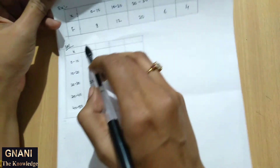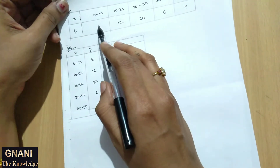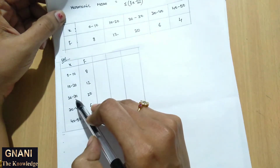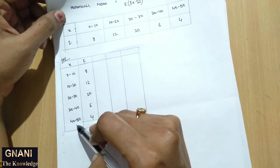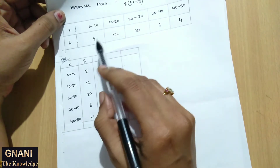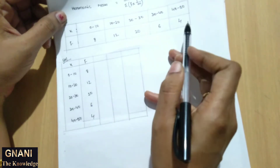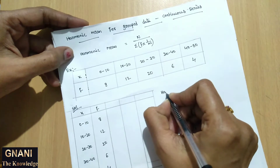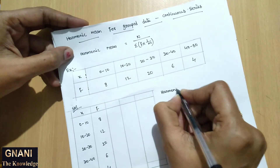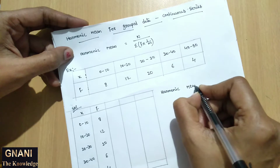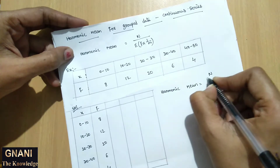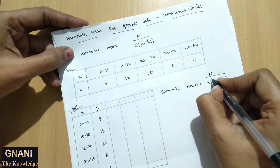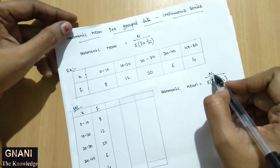So we will do the solution. The x values are 0 to 10, 10 to 20, 20 to 30, 30 to 40, and 40 to 50, with frequency values 8, 12, 20, 6, and 4. Our formula is: harmonic mean equal to N by summation f into 1 by m. Here N means the total sum of the frequencies.